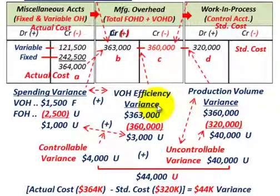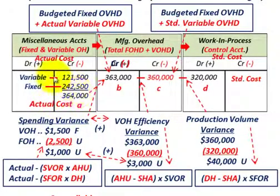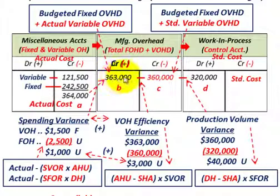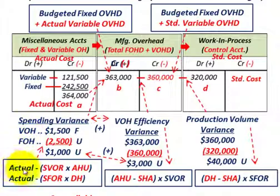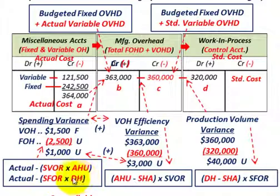As a follow-up: actual cost $364,000 versus budgeted fixed overhead plus actual variable overhead $363,000 gives a $1,000 spending variance, unfavorable — actual costs exceeded budgeted. To expand on the formulas: variable OH spending variance = actual variable OH minus (SVOR × AHU). Fixed OH spending variance = actual fixed OH minus (SFOR × denominator hours).